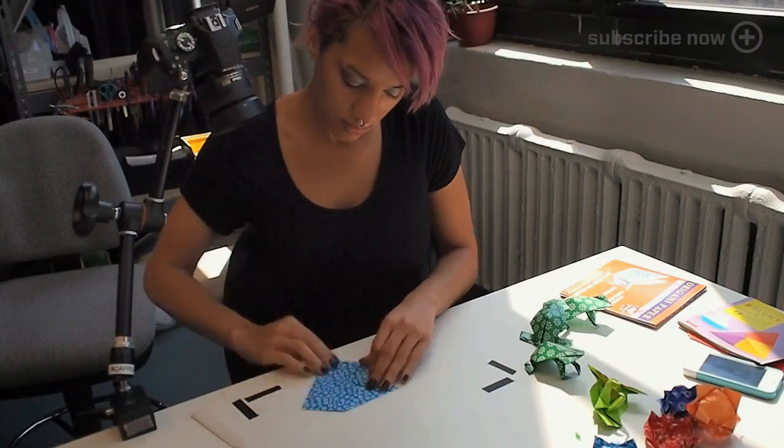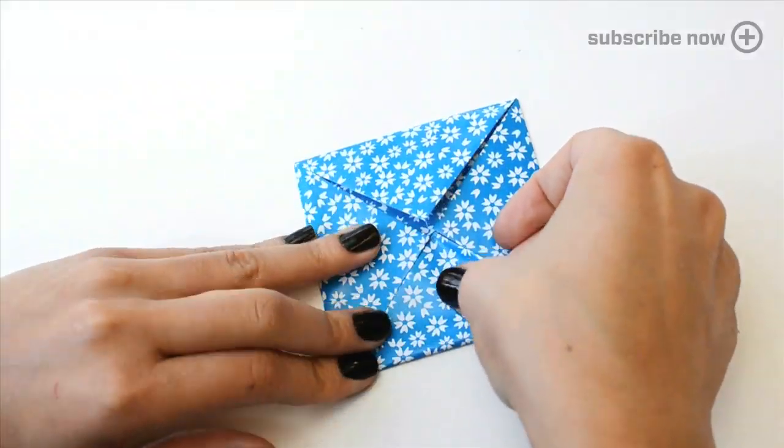Next up, just do that all over again. Take the new corners and fold them to meet the center point, creasing your folds as you go.